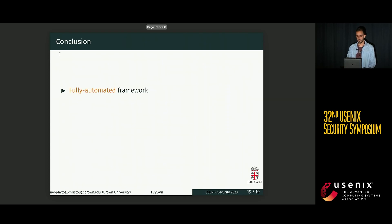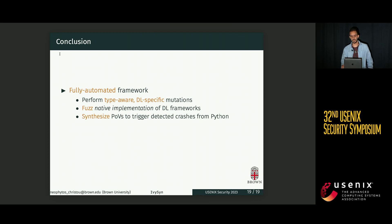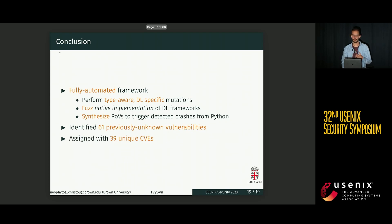To conclude, we created Ivysyn, a fully automated framework that uncovers crashes in deep learning frameworks. It works by performing type-aware and deep learning-specific mutations to fuzz the native implementation, uncover crashes, and then automatically synthesize POVs that trigger crashes from high-level Python APIs. We used it to test TensorFlow and PyTorch, where it successfully uncovered 61 previously unknown security vulnerabilities and was assigned 39 unique CVEs. If you'd like to check out Ivysyn's code, you can do so at the link on the slide. Thank you.